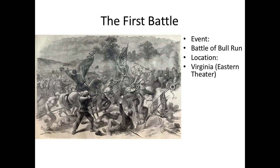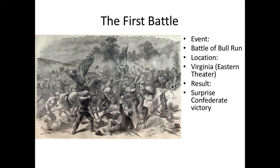The first actual official battle of the Civil War is going to be the Battle of Bull Run — or more accurately, the first Battle of Bull Run. It takes place in Virginia, very close to Washington D.C., and it is not only going to be a Confederate victory but quite a surprise that it is a Confederate victory. The reason this will be a significant battle is that it sets the tone for the war.